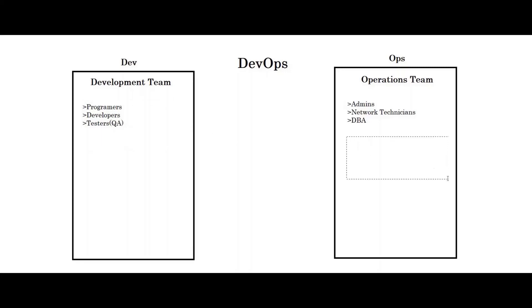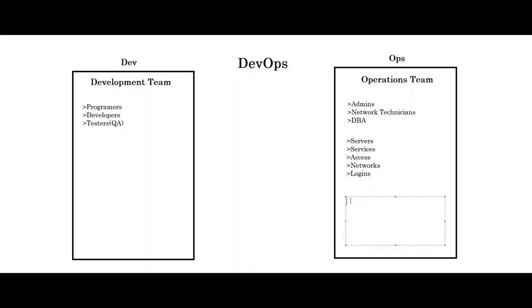Now what are the tasks of the operations team? The tasks of the operations team are checking the servers, whether they are up and running or not. They also check services that are running on the servers, access, networks, and logins. All this is taken care of by the operations team. To sum up, the actual task of the operations team is to manage the infrastructure.